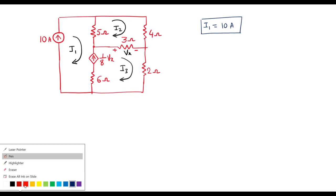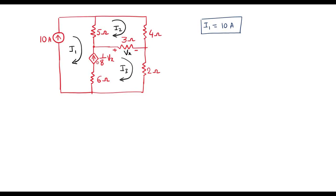Now we can observe that there is a current source of magnitude 1/8 Vx, which is between two loops. So I can represent: 1/8 Vx will be equal to I3 minus I1. I have taken I3 minus I1 because I3 and this direction are the same, so we should write I3 first. I will call it as equation 1.